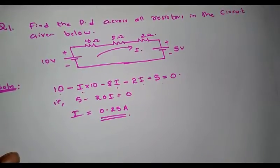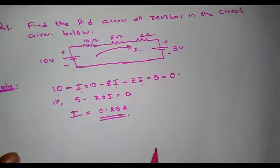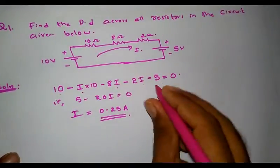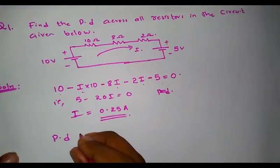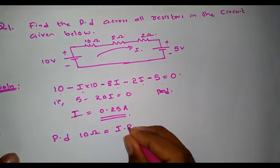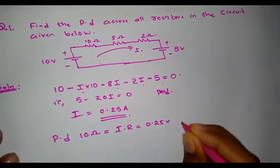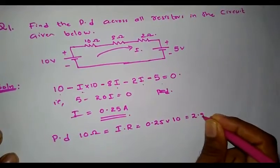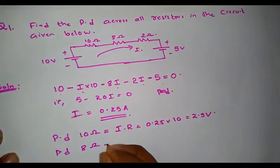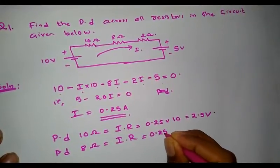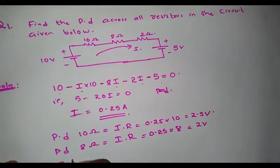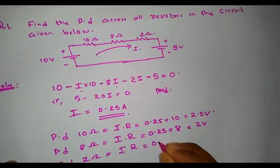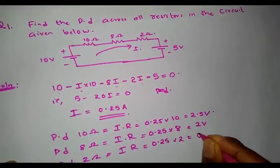Now let's address our question: find the potential difference across all resistors. I need to determine the potential drop across the 10 ohm, 8 ohm, and 2 ohm resistors. Potential drop across the 10 ohm resistor = I × R = 0.25 × 10 = 2.5 volts. Potential difference across the 8 ohm resistor = 0.25 × 8 = 2 volts. Potential drop across the 2 ohm resistor = 0.25 × 2 = 0.5 volts.